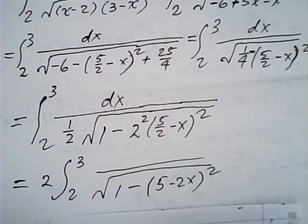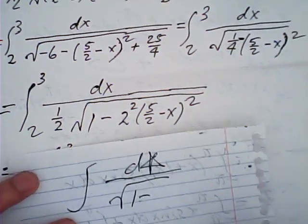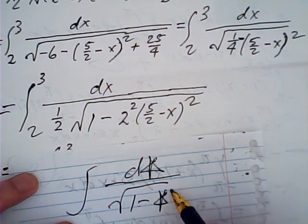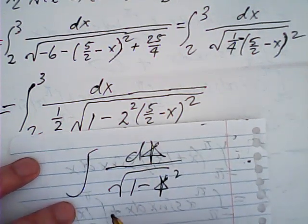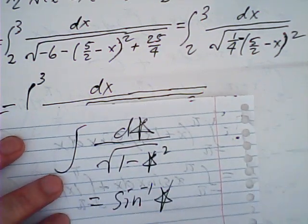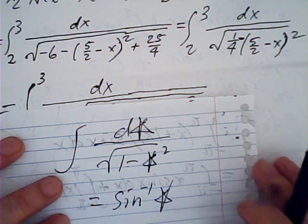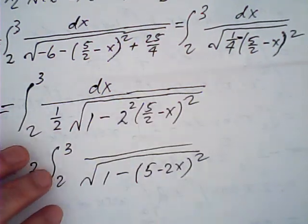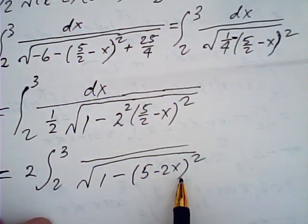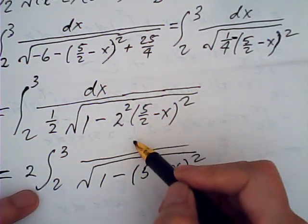The formula is actually d-star over the square root of 1 minus star square. That is the formula: arctangent. Star could be a single variable or even a function. Now here my star is 5 minus 2x.